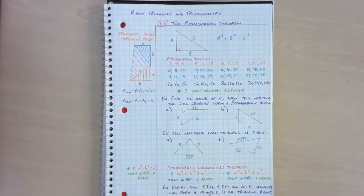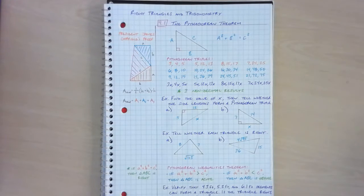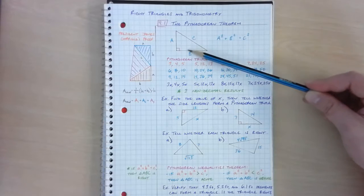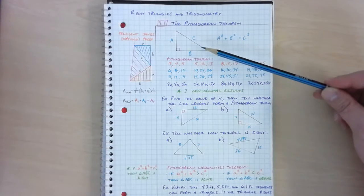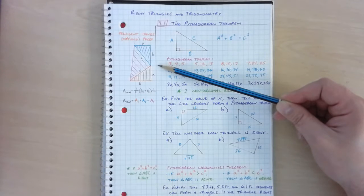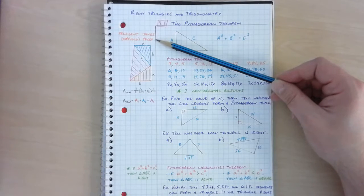This video is an extension of section 9.1 on the Pythagorean Theorem for Math 2. This section deals with the Pythagorean Theorem — one of the most famous theorems in mathematics — which is a squared plus b squared equals c squared, relating the side lengths in a right triangle. This video is going to focus mainly on the proof as to why a squared plus b squared equals c squared, specifically President James Garfield's proof.